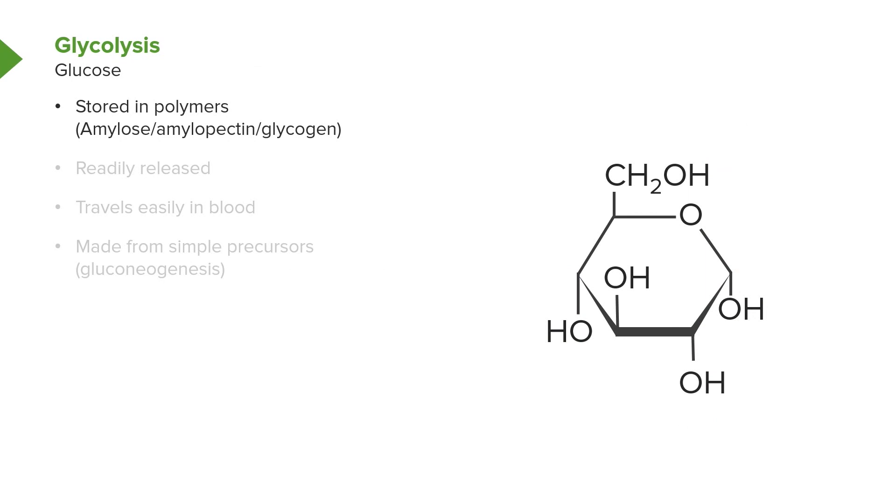Glucose structure is seen on the right here. In the body, at least in animals, it's stored in the form of glycogen. The breakdown of glycogen releases glucose for cells to use. In plants, amylose and amylopectin are used as the storage form. But the end product in each case of breakdown is the same – we get glucose that can be used for energy.